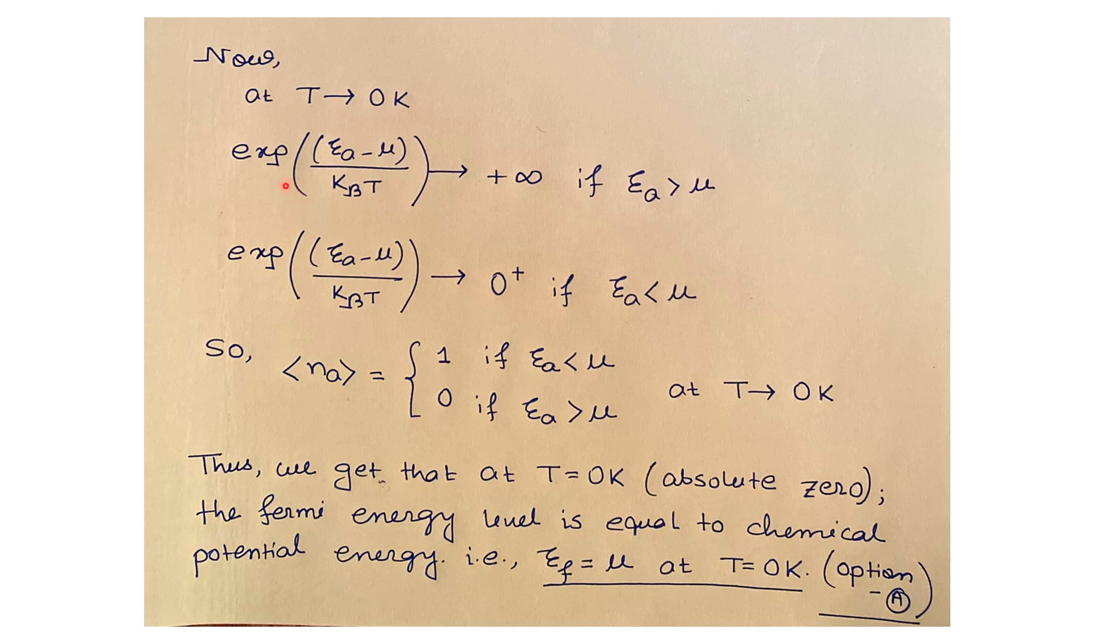that is exponential of (Ea minus μ) by kBT will tend to plus infinity if Ea is greater than μ. And this exponential term will be very small positive value close to zero if our energy level is less than our chemical potential μ.